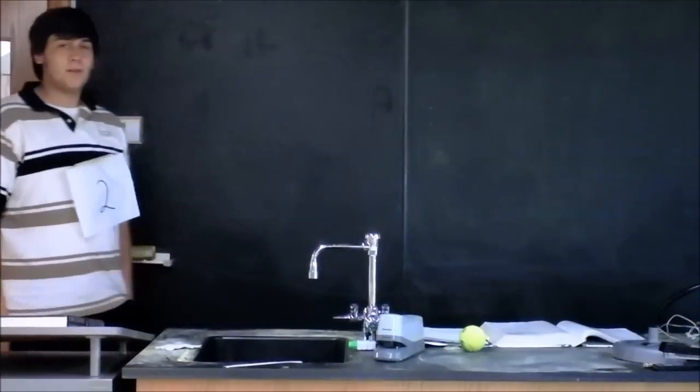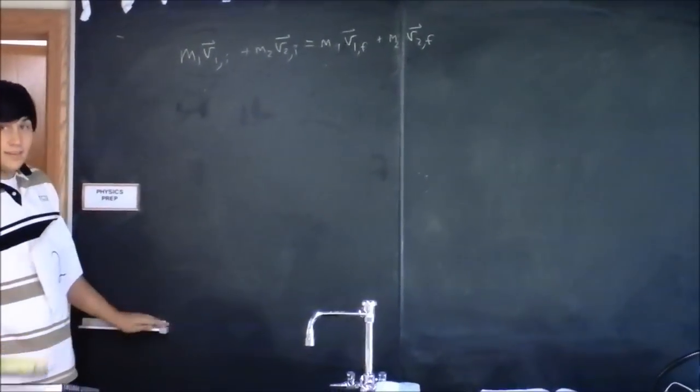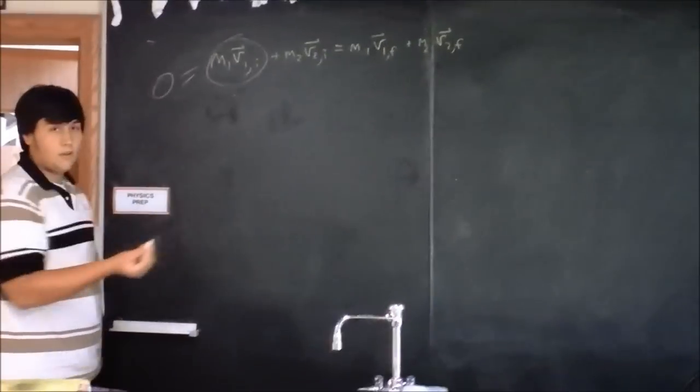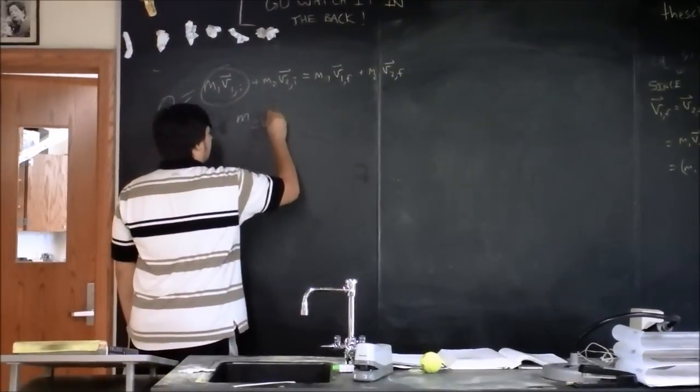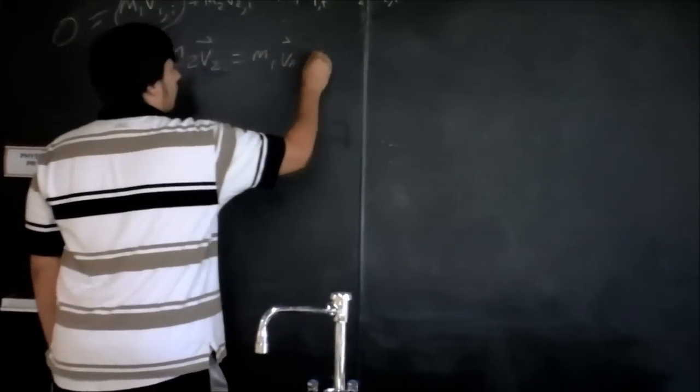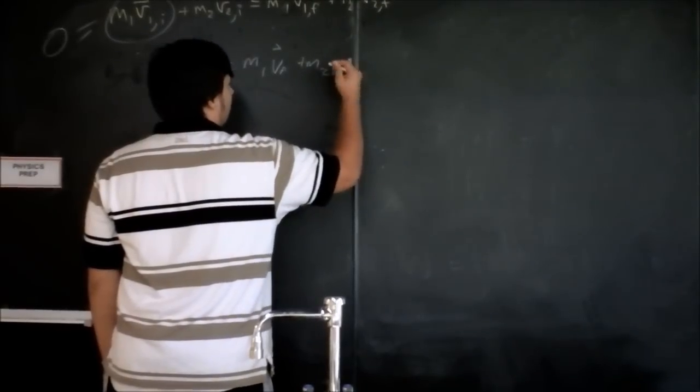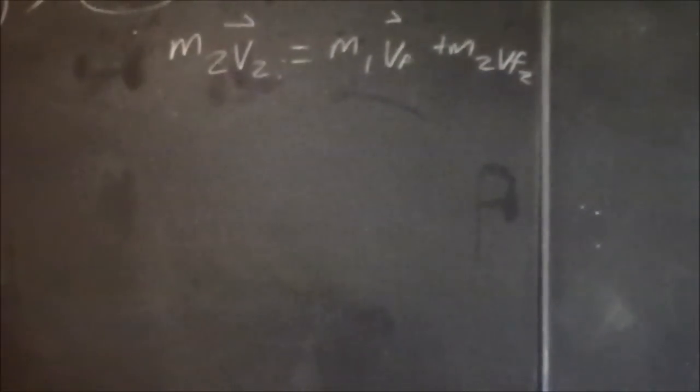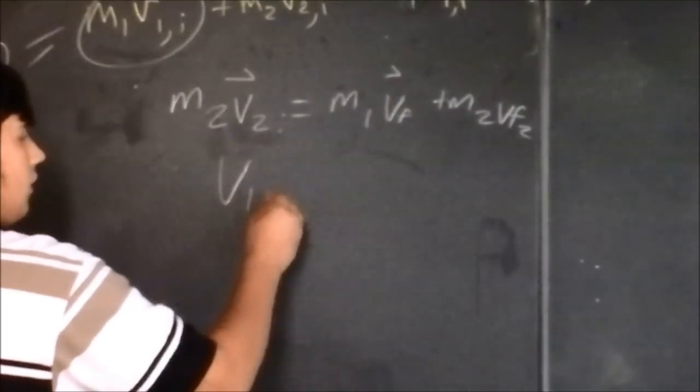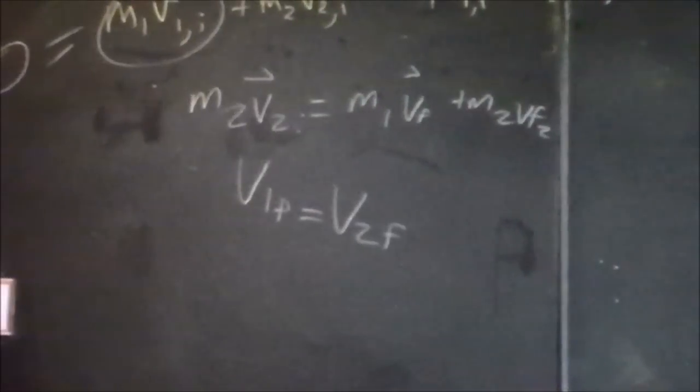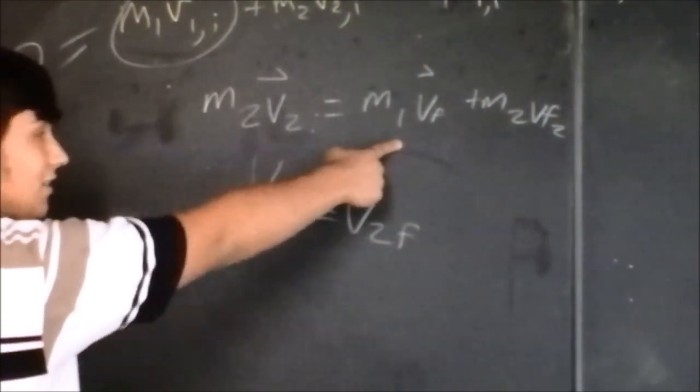That was an example of a perfectly inelastic equation. And since thing one's initial velocity was zero, the equation simplifies. Then, since we know that we were moving at the same speed because it was a perfectly inelastic equation, we can write that...